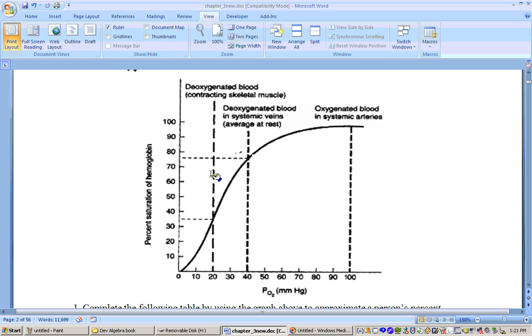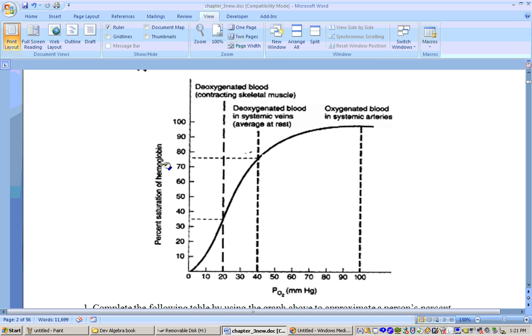Okay, on this video we're going to go over reading graphs. This graph right here gives the relationship between your PO2 level. Your PO2 means your partial pressure of oxygen compared to your percent saturation of hemoglobin.